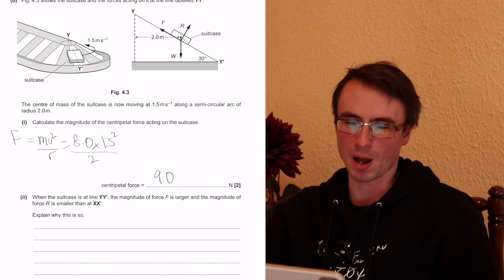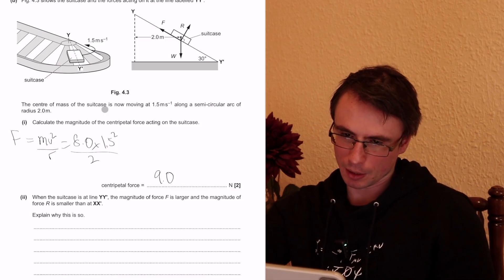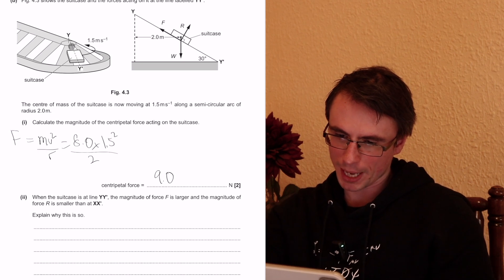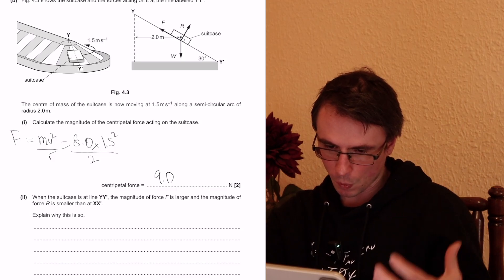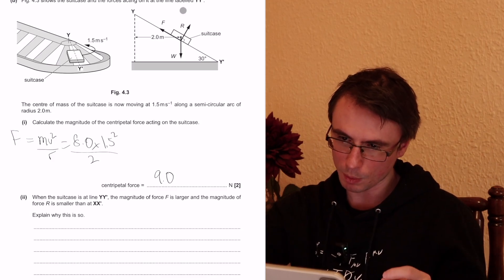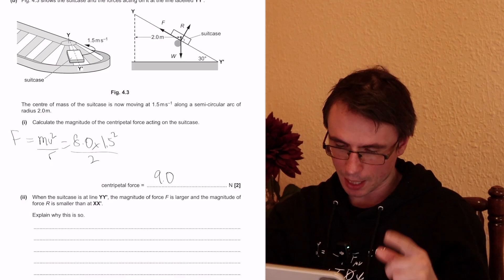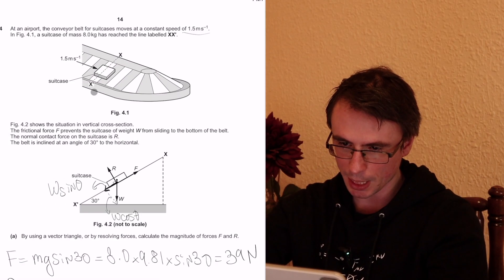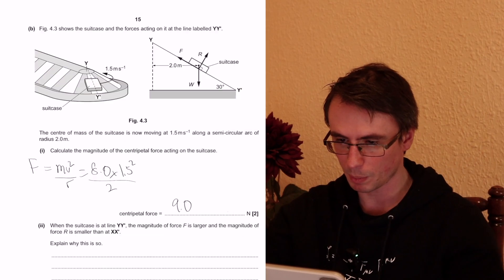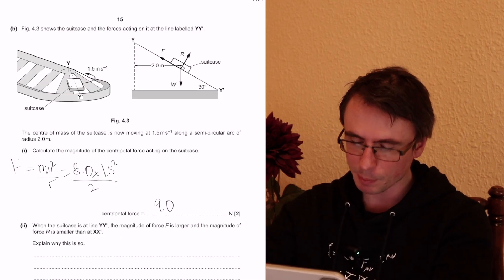And now for the more interesting part. When the suitcase is at the line yy prime, the magnitude of the force F is larger and the magnitude of the force R, that's the normal reaction, is smaller than at xx prime, which is basically when it's moving along at a constant speed without turning. Explain why this is so. Okay, so our first job in any describe and explain or complicated looking question is just to understand what's going on.